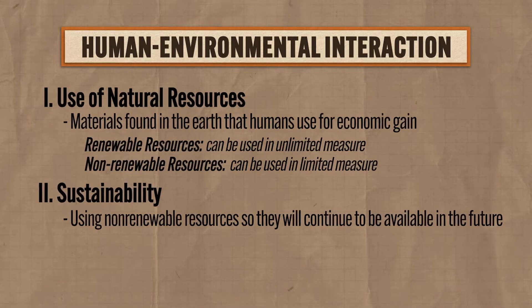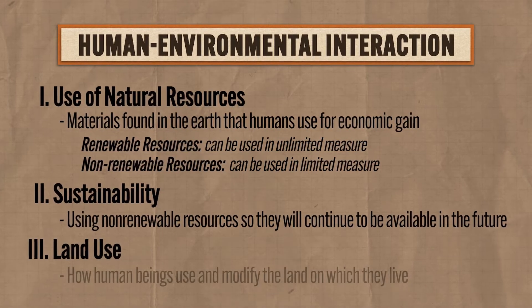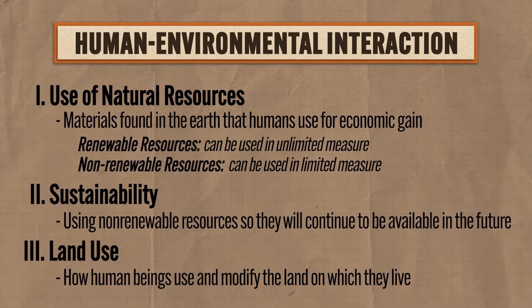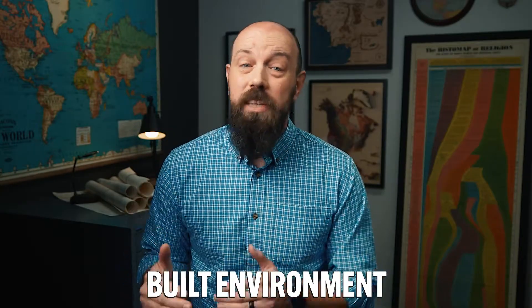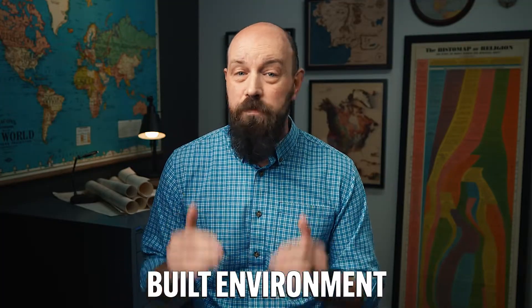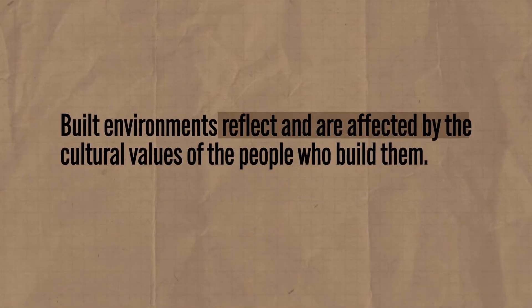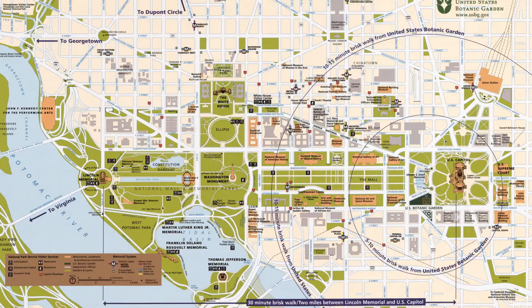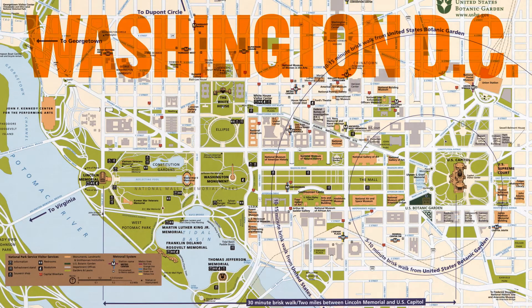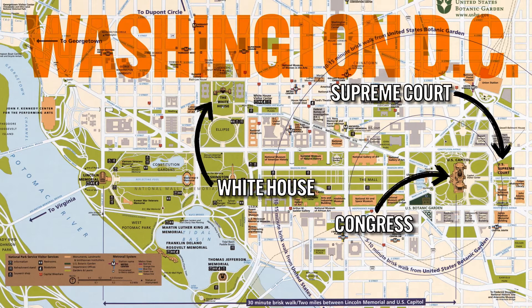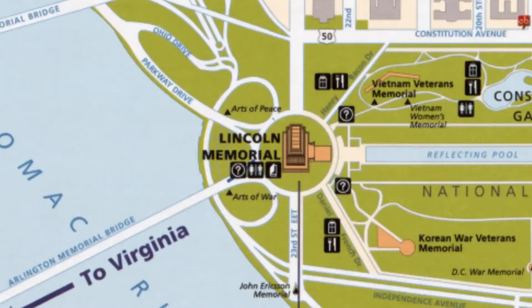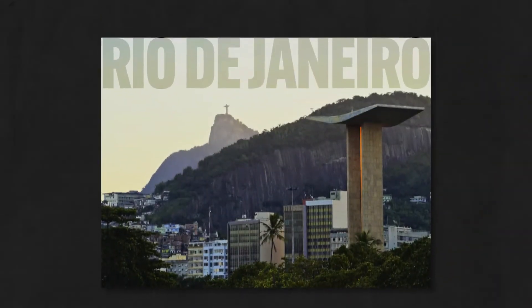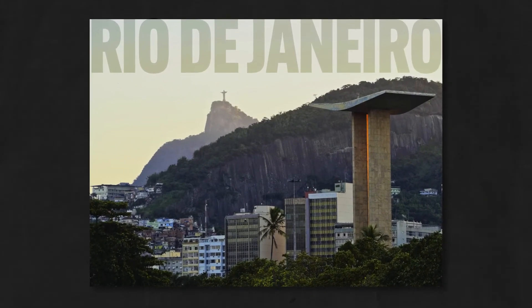The third major category of human-environmental interaction concerns land use, which describes how human beings use and modify the land on which they live. Under this heading, geographers study humans' built environment, which includes everything on a piece of land that humans have built — from Zaxby's to neighborhoods to religious spaces. What's most important to remember is that built environments reflect and are affected by the cultural values of the people who build them. For example, the built environment in Washington D.C. reflects the values of American government, with three branches of government and three different buildings. That looks very different from the built environment of Rio de Janeiro because Brazilians have different cultural values than Americans, and these differences are reflections of various cultural landscapes — which we'll get to in Unit 3.